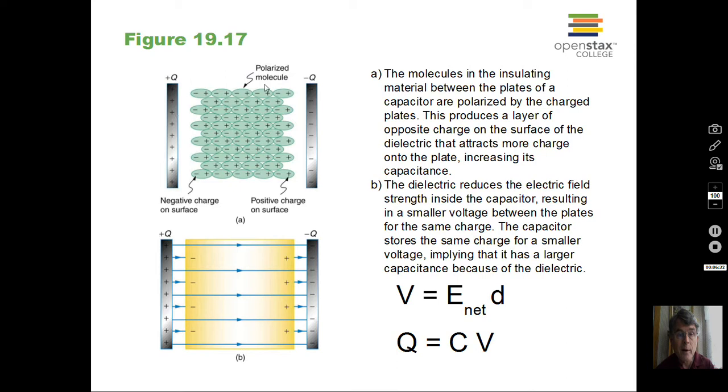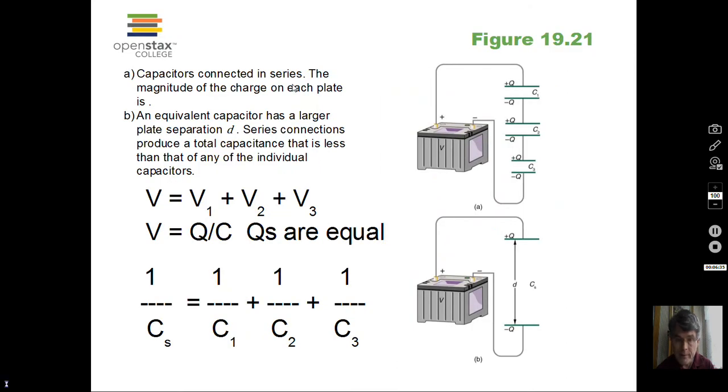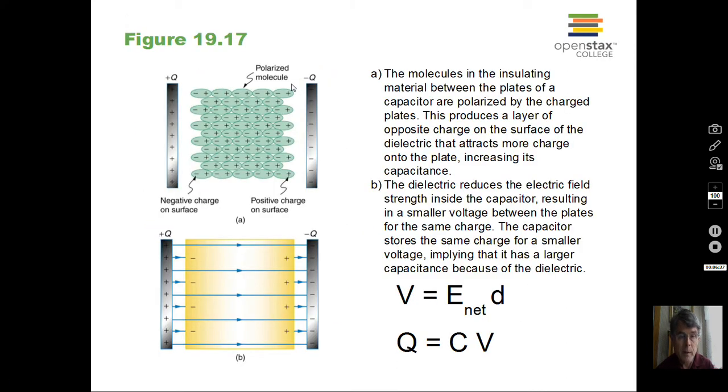So the electric field here is Q minus Q. The electric field would be running across from left to right in this transparency, this slide. That causes the molecules of the dielectric to polarize. The negative part of the molecule does not separate from the molecule, but it goes to one side to be closer to the plus plate. The electric field of the dielectric points to the left. The electric field of the plates points to the right. And the net electric field is now smaller between the two plates.